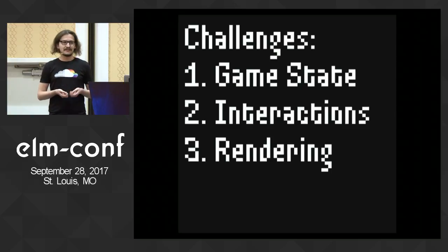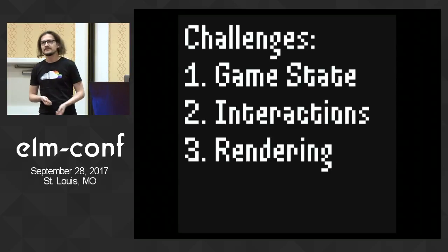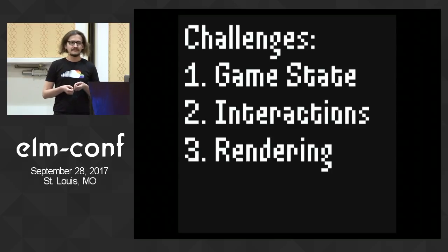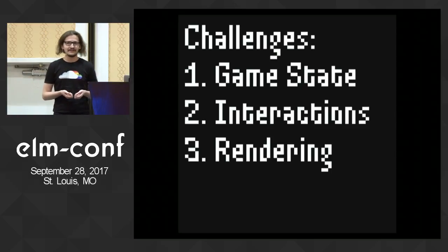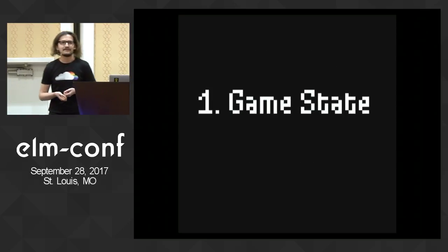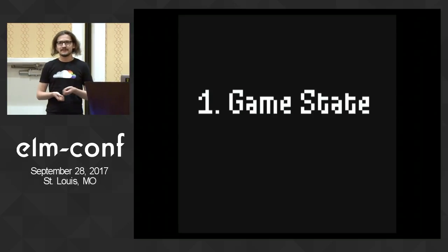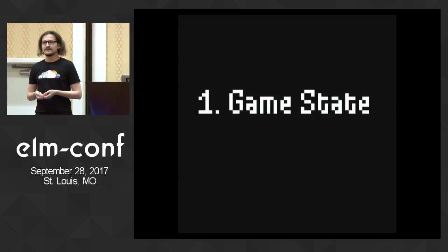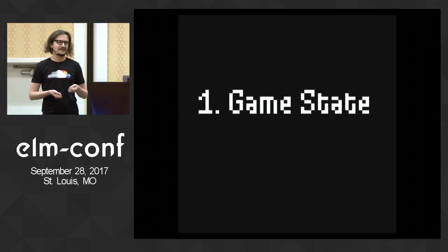I split the challenges into three categories: game state, interactions, and rendering. And if you look at all of them, they correspond to model, update, and view in the Elm architecture. Starting with the game state, it's the most important thing because the way you model the game has the highest impact on the code that you write. The code complexity may change a lot depending on how you design the model, and in games it also has a huge impact on performance.